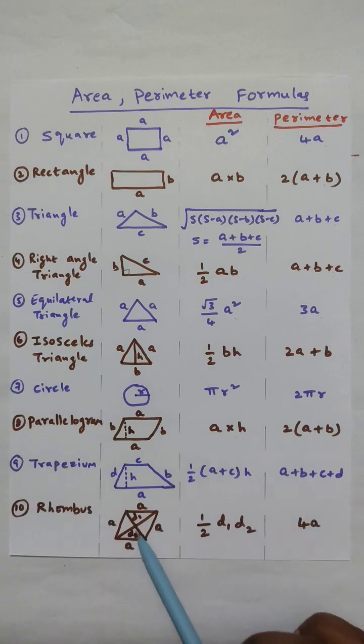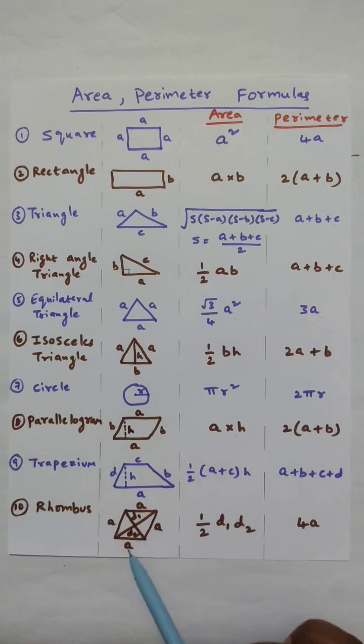And rhombus. Rhombus means it is a 4 sided geometric figure. All the 4 sides are equal in length and angle between the two adjacent sides is not 90 degrees. Less than 90 degrees. And here D1 and D2 are the diagonal.